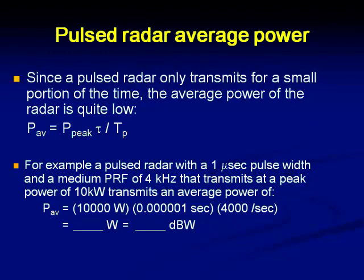Now let us spend some time on pulsed radar average power. Since a pulsed radar only transmits for a small portion of the time, the average power is given by the peak power multiplied by pulse duration divided by the total pulse period. For example, a pulsed radar with a 1 microsecond pulse width and a medium PRF of the order of 4 kilohertz transmits a peak power of 10 kilowatts. In such a case, the peak power is 10 kilowatts and the pulse width is 1 microsecond divided by the PRT. Normally we express these in terms of dBW.